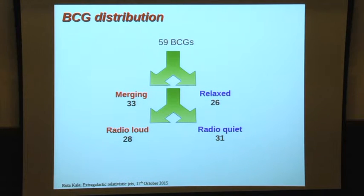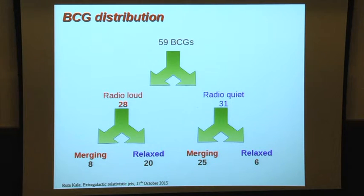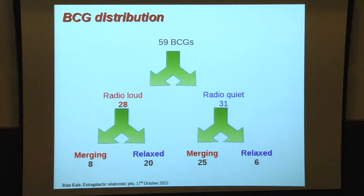Looking at the distribution of radio loudness of BCGs in each sample: among 59 BCGs, 33 reside in merging clusters and 26 in relaxed clusters. Of these 59, 28 are radio loud and 31 are radio quiet. Crucially, among the 28 radio loud BCGs, 8 are in merging and 20 are in relaxed clusters. Among the radio quiet, 25 are in merging clusters while only 6 are in relaxed clusters. This already indicates a clear disparity in the occurrence of radio emission in BCGs in relaxed versus merging clusters.